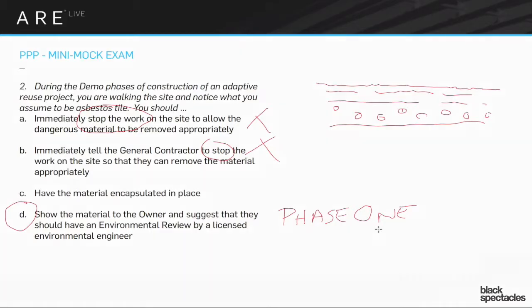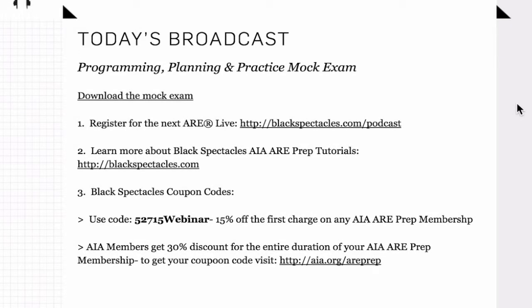Thanks for tuning in. If you'd like to attend our next live broadcast, visit blackspectacles.com/podcast to register — you'll have a chance to ask questions and get live feedback. To learn more about our ARE prep curriculum, go to blackspectacles.com. You can use a coupon for 15% off the first charge on any ARE prep membership with code 52712-15-WEBINAR, expiring June 15th. AIA members can visit aia.org/areprep for a 30% discount for the entire duration of membership, also expiring June 15th.